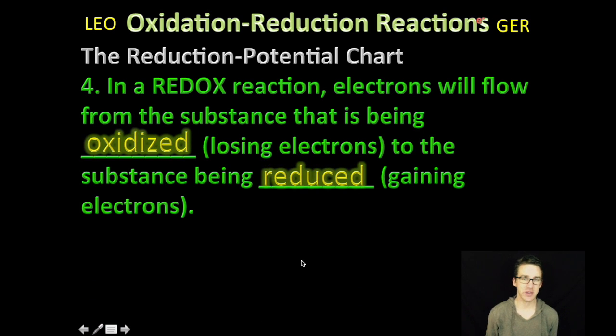The last thing to keep in mind as you think about the reduction potential chart: remember that in a redox reaction, electrons will flow from the substance that is being oxidized (losing electrons) to the substance that is being reduced (gaining electrons).